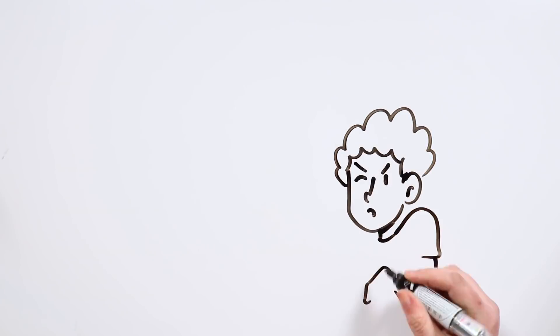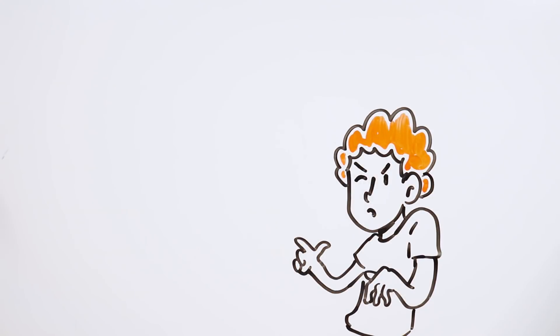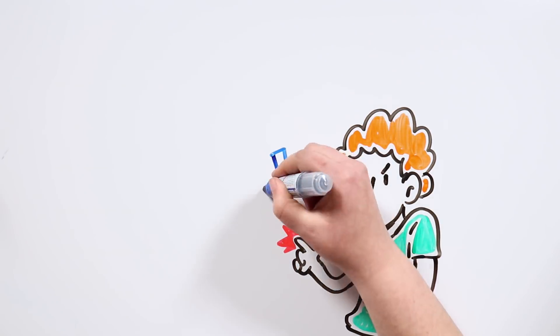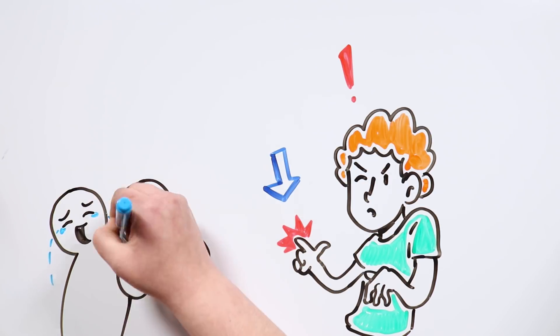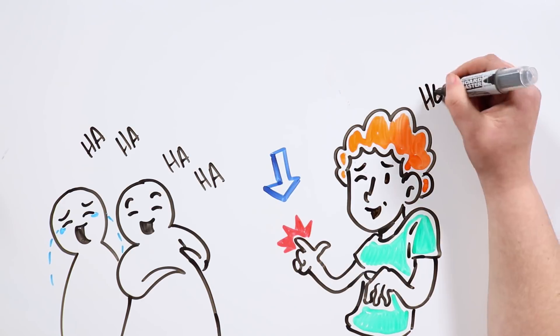Now we know why sometimes we feel those cramps when touching an object or another person. It is because one of the parties is passing its electrical charge excess to the other. We certainly live in an electrifying world!